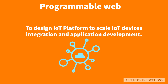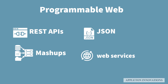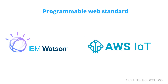Next, we will see Programmable Web Standards and how to apply them to Internet of Things scenarios. Programmable Web Standards help design an IoT platform to scale your IoT device integration and application development. These standards are REST (Representational State Transfer) based APIs — Application Programming Interfaces, which are very helpful for exchanging data between client and server — along with JSON (JavaScript Object Notation), Mashups, and Web Services. Most IoT cloud platforms like IBM Watson Cloud and Amazon Web Services IoT Cloud use Programmable Web Standards.